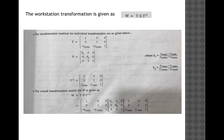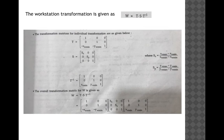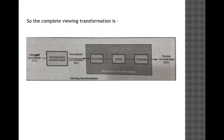As described, first we translate to the origin using matrix T, shifting by (-xw_min, -yw_min) to move the viewport to the origin. Then we apply the scaling matrix S. Then we translate back to its original position using T-inverse. Here, sx and sy are the scaling factors whose values are given on the right side. The overall transformation matrix W = T · S · T-inverse; substituting the values and multiplying gives the final transformation matrix.